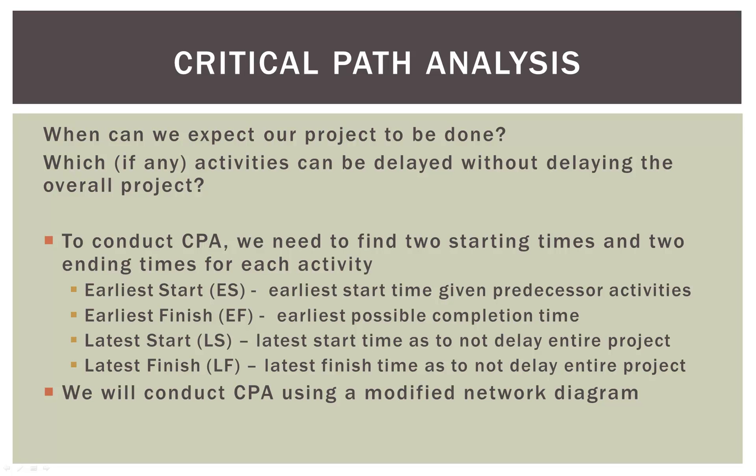The other two values are a little bit more difficult to explain: the latest start and the latest finish. We're going to find those by doing our backward pass through our network. What it means is that certain activities have a start and finish threshold so as not to delay the entire project. Doing the backward pass will help us figure that out, and to do all this we're going to have to modify our network diagram — more specifically, our nodes.